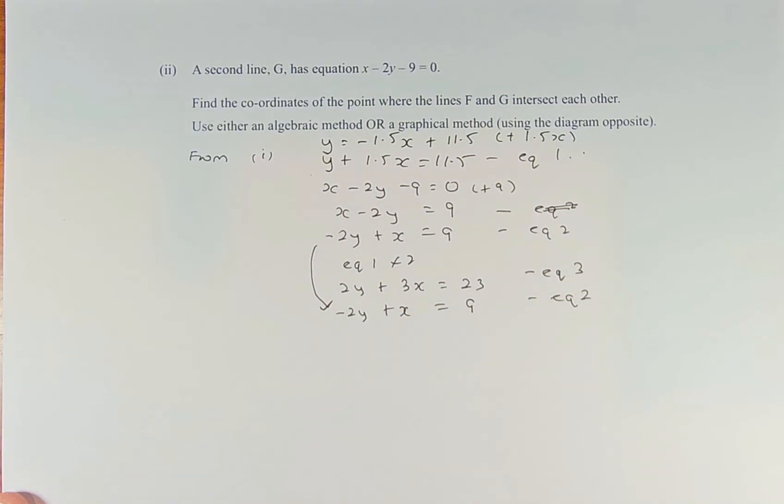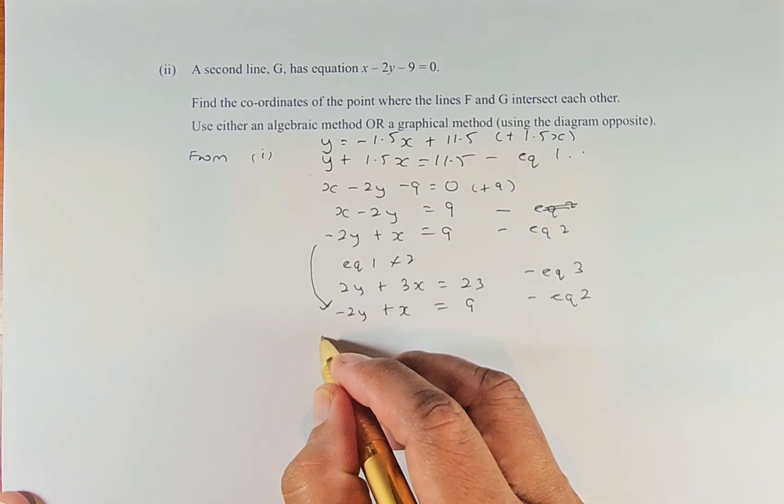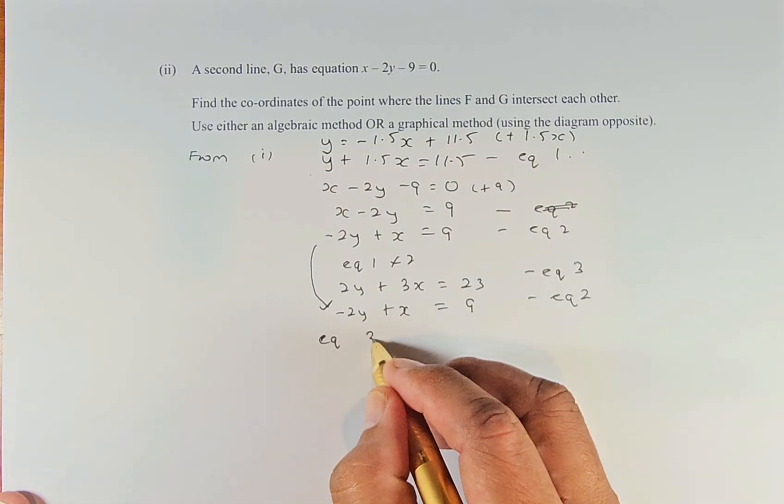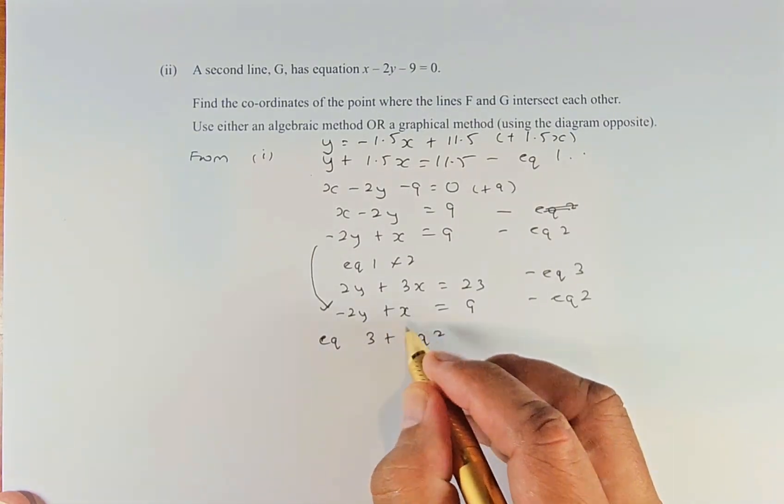To find the x and y values simultaneously, we add equation 3 plus equation 2.